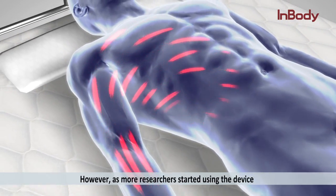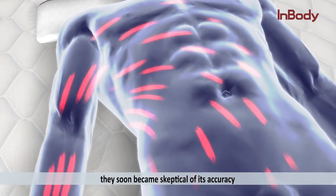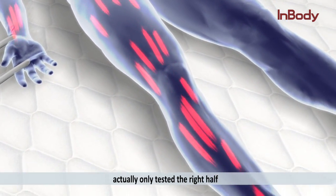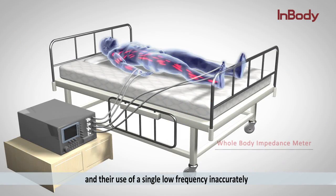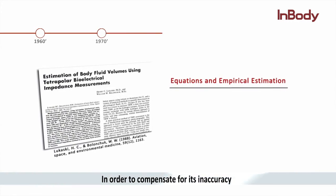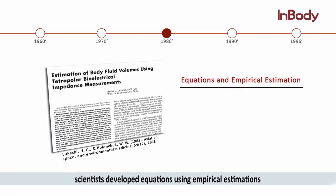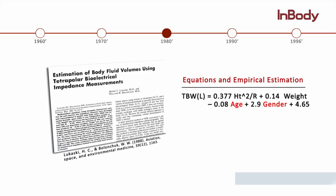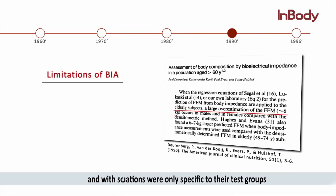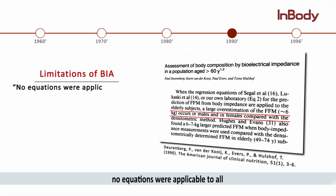However, as more researchers started using the device, they soon became skeptical of its accuracy. The devices claimed to produce whole-body results but actually only tested the right half of the body, and their use of a single low frequency inaccurately measured the whole body impedance. In order to compensate for this inaccuracy, scientists developed equations using empirical estimations such as age and gender. However, the equations were only specific to their test groups, and with so many additional factors to account for, no equations were applicable to all.